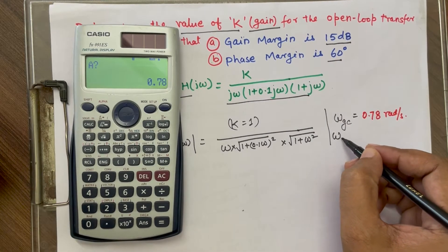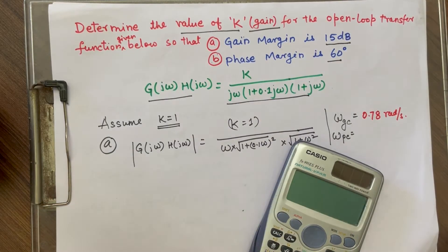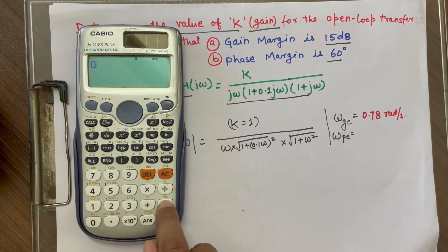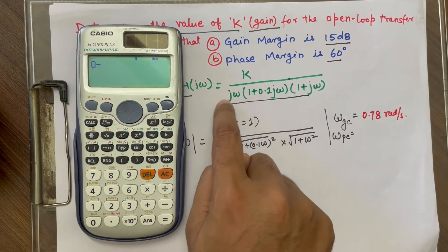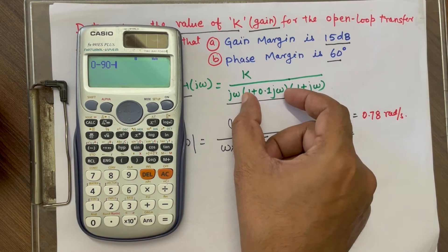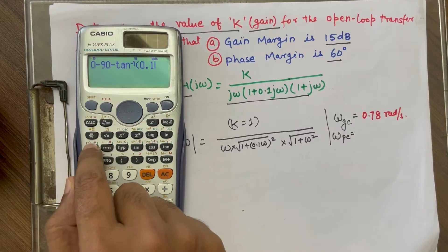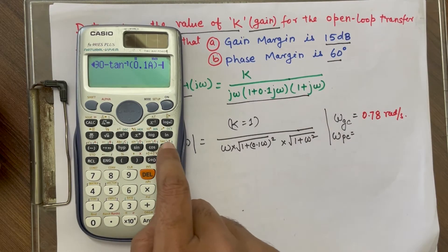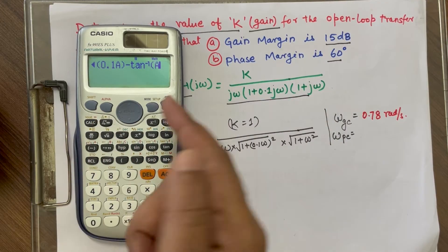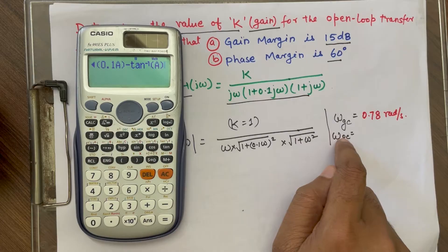Now we will find out the phase crossover frequency. We write the phase of the open-loop function. Since the numerator is a constant its phase is 0, and all three denominator terms contribute negative phase. The total phase is: −90° − tan⁻¹(0.1ω) − tan⁻¹(ω). We will calculate this for different frequencies and try to find where the phase equals −180°, which will be the phase crossover frequency.